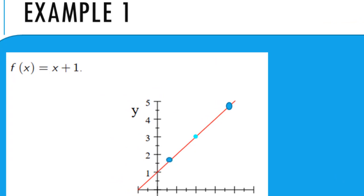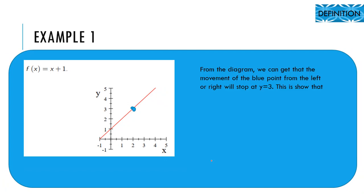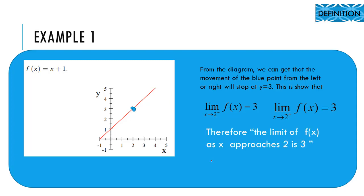Example one: the linear function x plus one is given. Looking at the diagram, the movement of the blue point from the left or right will stop at y equal to three. This shows that the left-side limit is three and the right-side limit is three. Therefore we can conclude that the limit as x approaches two is three. This is the example of a linear function.